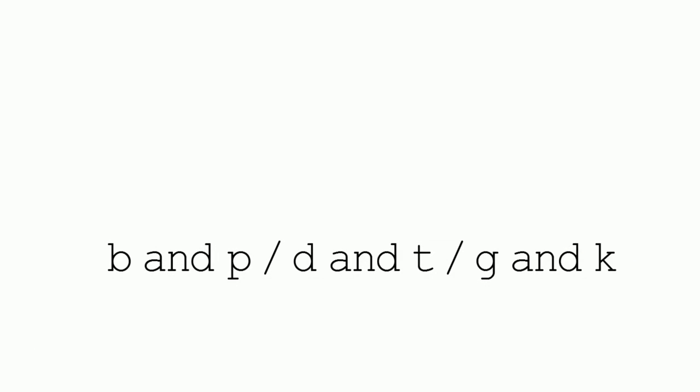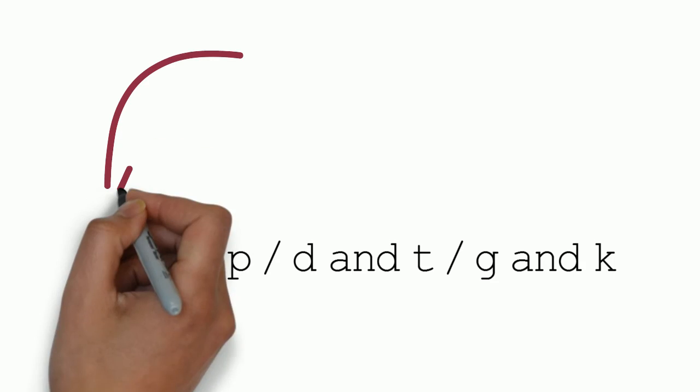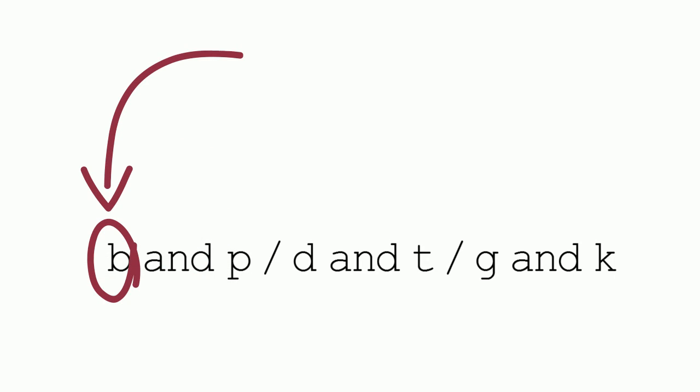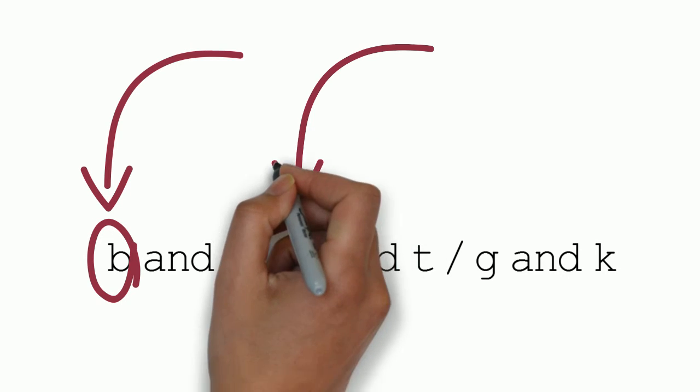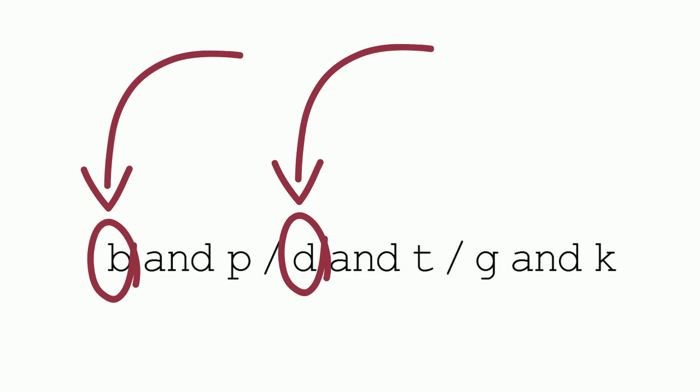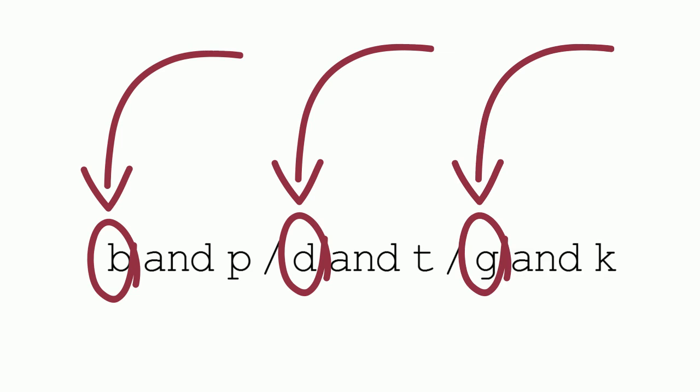Look at these pairs. B has vibration. Chinese speakers tend to only say P instead of B, D instead of T, and G instead of K. Make sure you know how to say these voiced sounds — sounds with vibration.